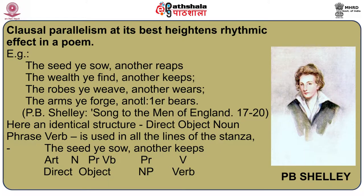The identical structure is: direct object — noun phrase — and a verb. 'The seed ye sow' is the direct object; 'another' is the pronoun, that is the noun phrase; 'keeps' is the verb. So direct object, noun phrase, verb is the structure of all four lines, repeated throughout. The sentence in ordinary form would be 'another keeps the seed ye sow,' where 'another' is the subject. Here, 'the seed ye sow' has been brought to the initial position, and all four lines share the same structure. This adds to the poetic rhythm of the lines.